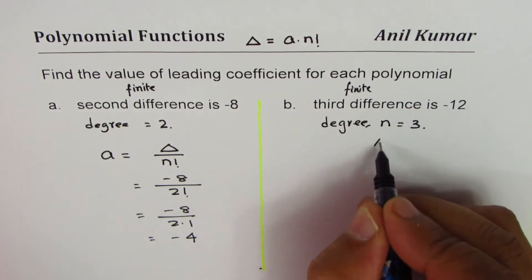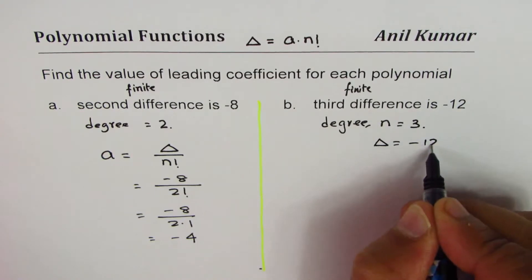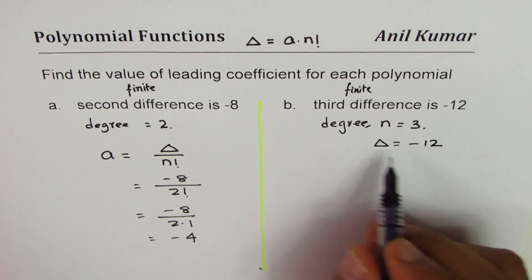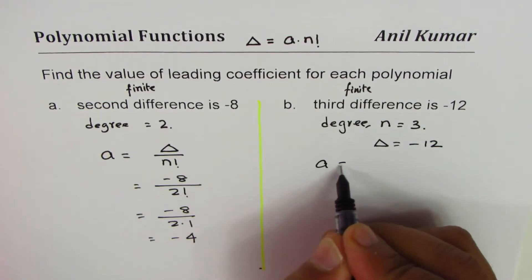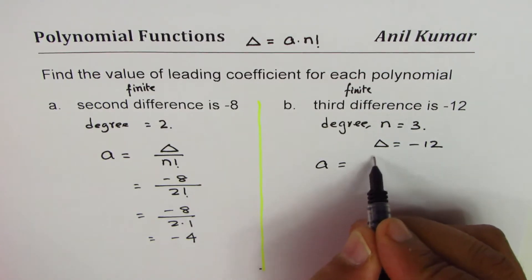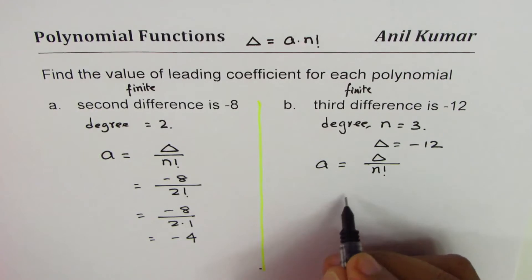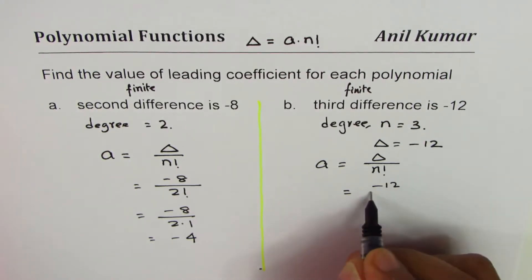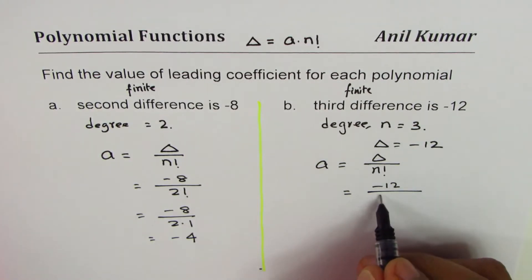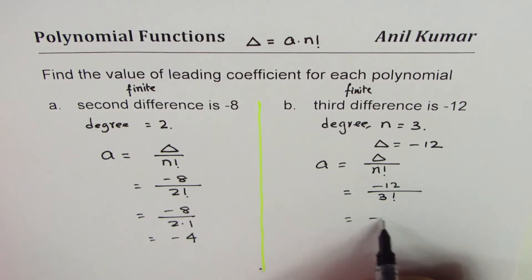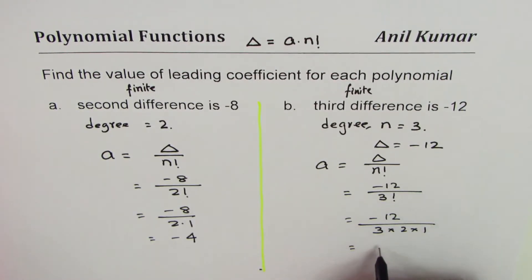Third difference is constant, that means delta is given to us: -12. So a, the leading coefficient, should be the quotient of these two, n factorial. -12 divided by 3 factorial, which is -12 divided by 3 times 2 times 1, which is 6. -12 divided by 6 is -2.